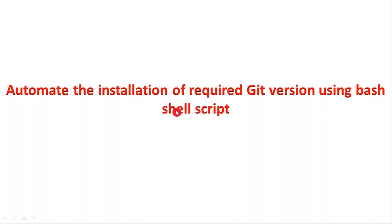Here we are going to see how to automate the installation of a required Git version using a bash shell script. I'm going to install the required Git by downloading a tar file. Suppose I want to install version 2.3.5 — I will download that particular Git version tarball, then extract it, then configure, compile, and finally install. To compile you should have GCC.